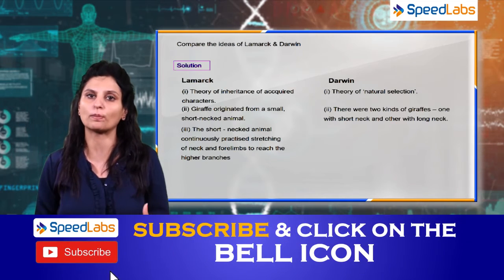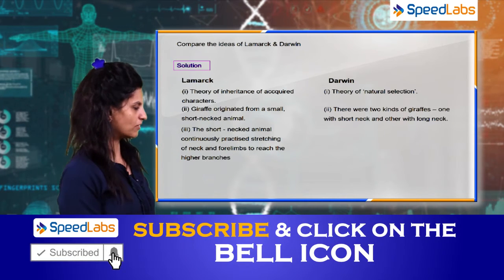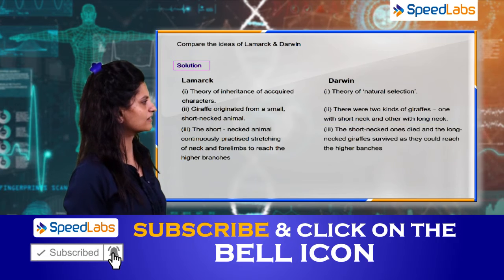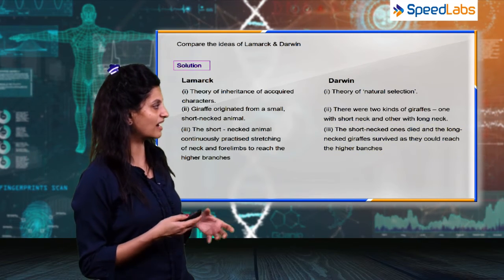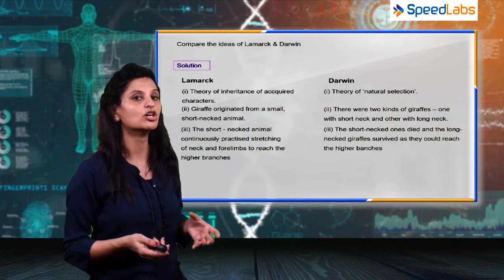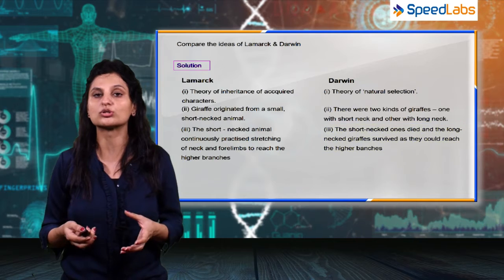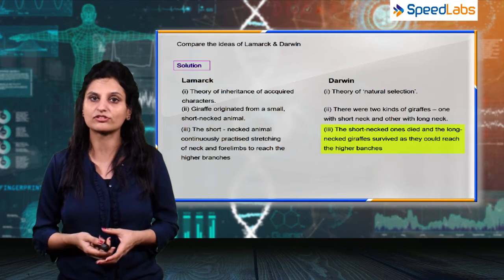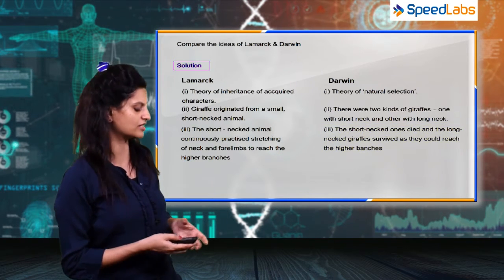What did Darwin say? Darwin said that the short-necked ones died or perished, whereas the long-necked animals which could feed on the leaves and had food survived and became a species.